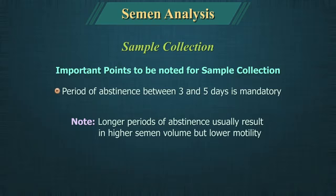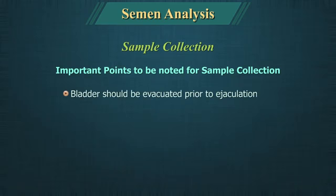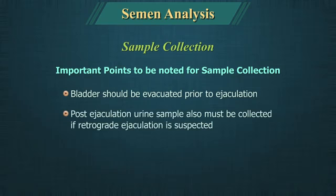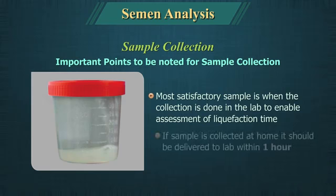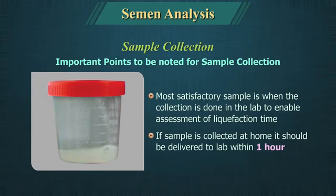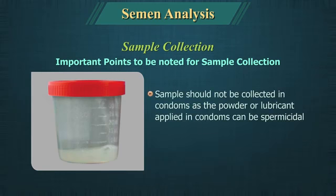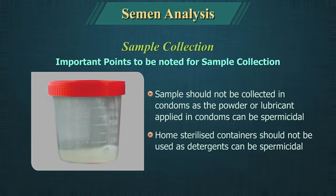Longer periods of abstinence usually result in higher semen volume but lower motility. The bladder should be evacuated prior to ejaculation. A post-ejaculation urine sample must also be collected if retrograde ejaculation is suspected. The most satisfactory sample is collected in the lab to enable assessment of liquefaction time. If the sample is collected at home, it should be delivered to the lab within 1 hour. Sample should not be collected in condoms, as the powder or lubricant applied can be spermicidal.